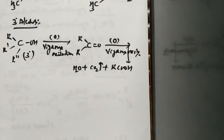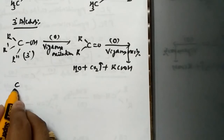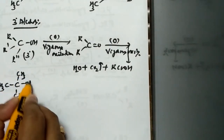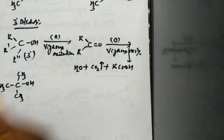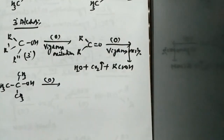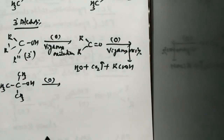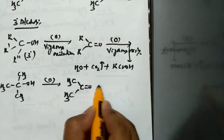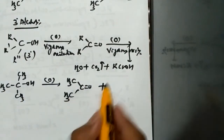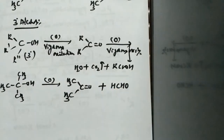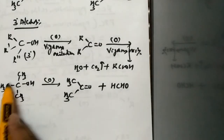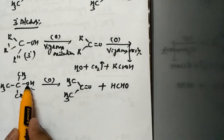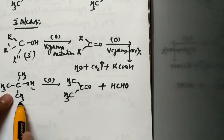Taking tertiary butyl alcohol as a specific example: when this tertiary alcohol is subjected to vigorous oxidation, we get a ketone as an intermediate. Here, acetone is obtained, and along with acetone, an aldehyde is obtained as a byproduct, because from the two CH₃ groups a hydrogen gets eliminated to form the ketone.